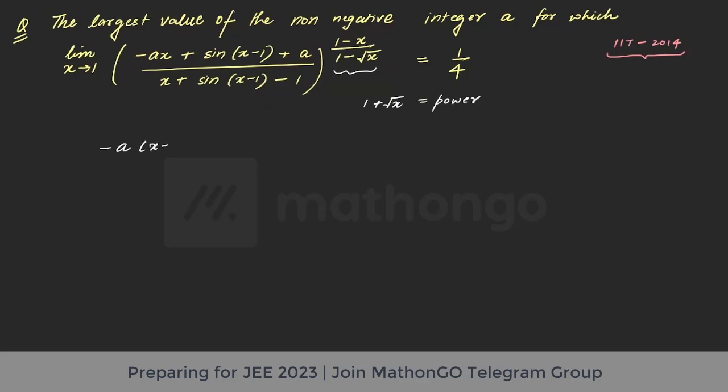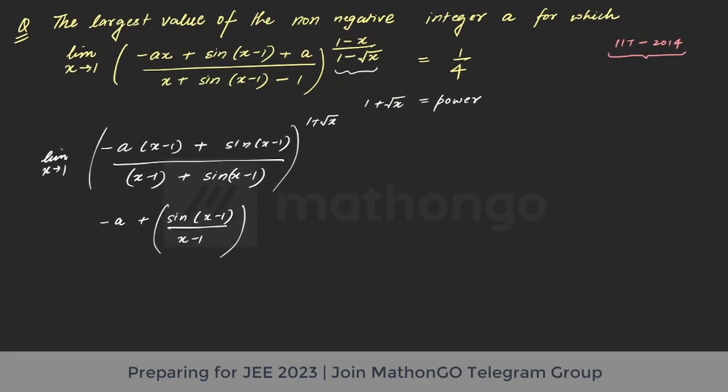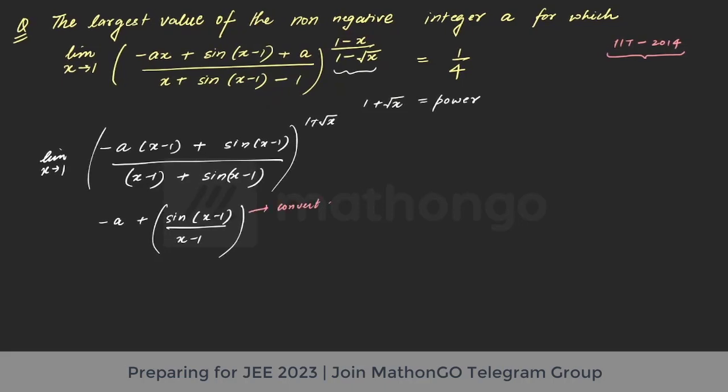So I take minus a comma and this is x minus 1 plus sin(x-1) divided by this is x minus 1 plus sine. Now you have understood why I have done this, right? This will convert to 1. Limit ka funda, limit trigonometric limit basic limit.